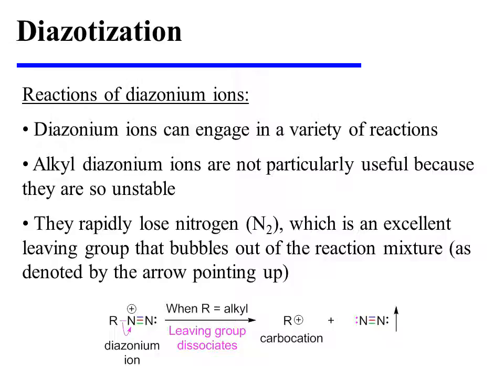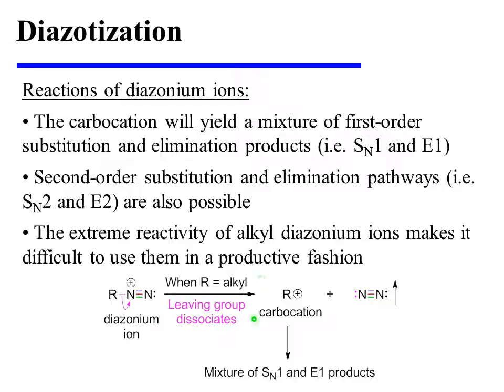These diazonium ions can engage in a variety of reactions. However, alkyl diazonium ions are not especially useful because they are so unstable. They rapidly lose nitrogen, which is an excellent leaving group that bubbles out of the reaction mixture, as denoted by the arrow pointing up. The carbocation that results will yield a mixture of first-order substitution and elimination products. Second-order substitution and elimination pathways are also possible prior to the loss of the leaving group. The extreme reactivity of alkyl diazonium ions makes it difficult to use them in a productive fashion.